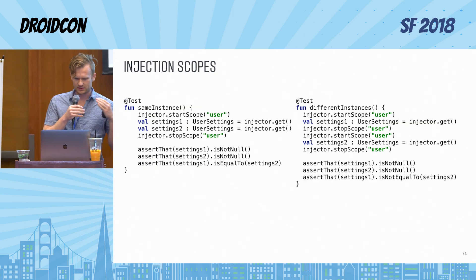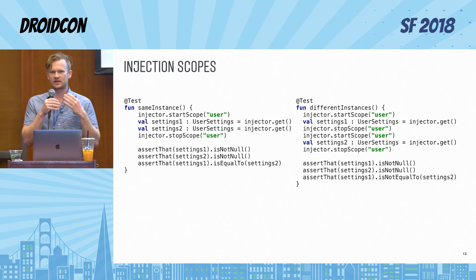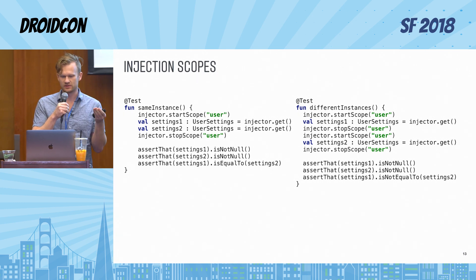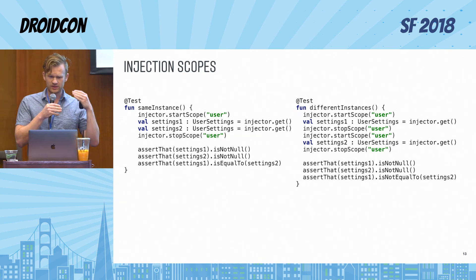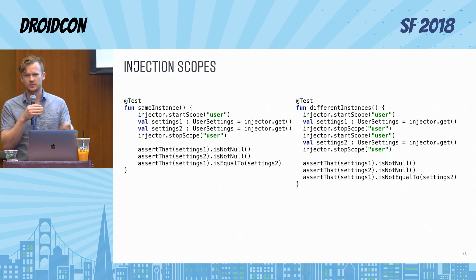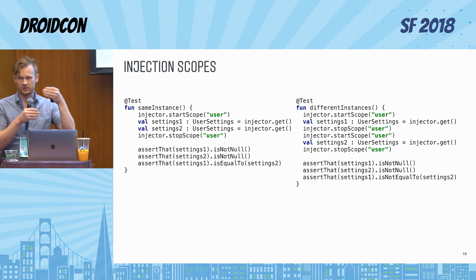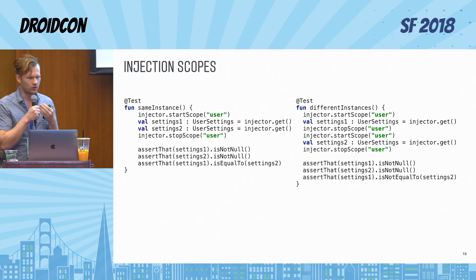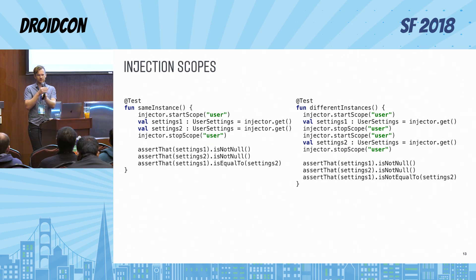Here are two unit tests that illustrate how scopes work. Let's say you want to maintain an instance of a class called UserSettings for the lifetime while the user is logged in. When the user logs in you ask injector to start the user scope, and from that moment every time you request UserSettings you keep getting the same instance. But if the user logs out and the user scope is stopped, and a new user logs in, you will get a new instance of UserSettings. That's how you manage singleton instances with a specific lifetime coupled to your business logic.